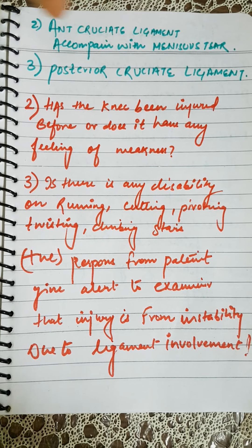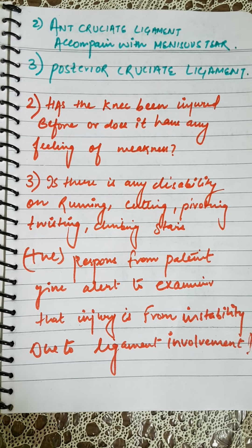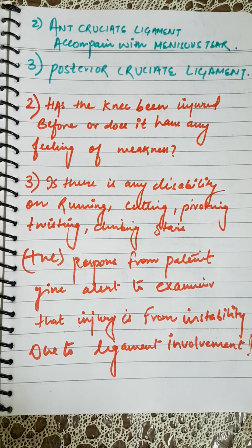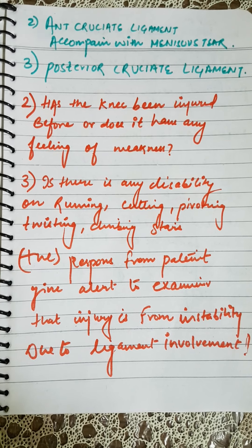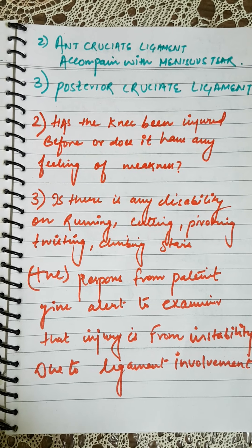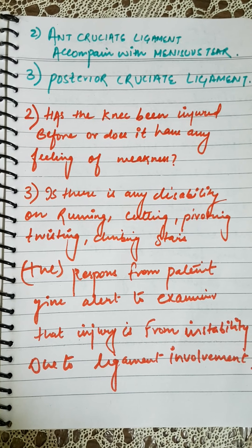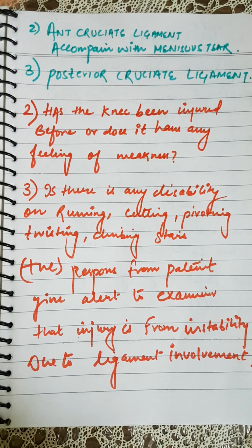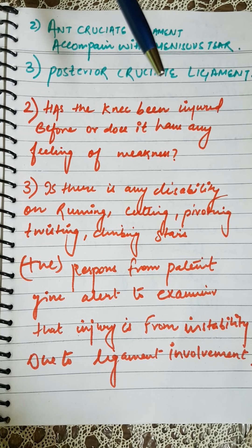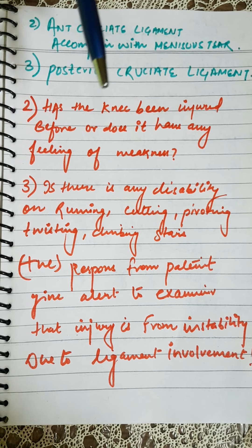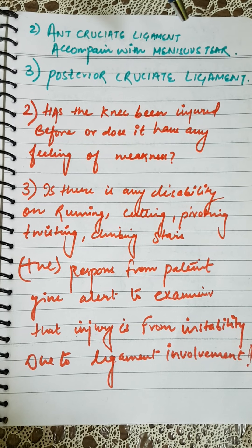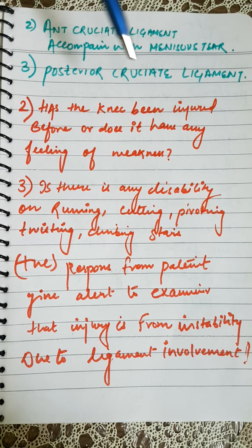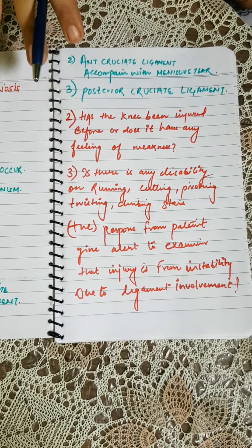Positive responses also indicate possible muscle dysfunction, joint or articular problems, or meniscus pathology. The fourth question is whether there was a click or pop when the injury occurred. A distinct pop may indicate an anterior ligament tear or osteochondral fracture, and popping on the lateral aspect of the knee may be due to the popliteus tendon snapping over the lateral femoral tubercle within 2 cm of the muscle.